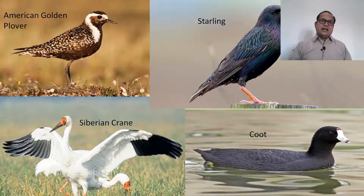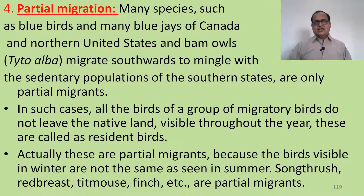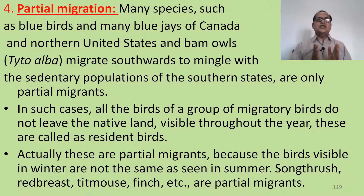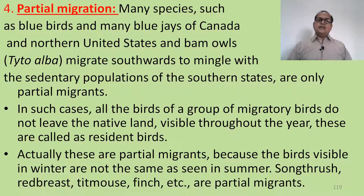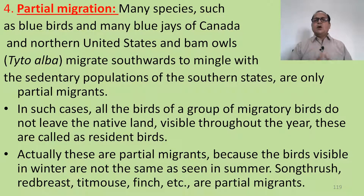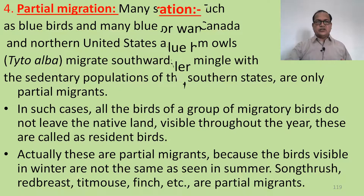Some well-known migratory birds include the American golden plover, starling, Siberian crane, and coot. Partial migration means only a part of the population migrates. There are many species such as the bluebirds, blue jays of Canada and North America, and the barn owl (Tyto alba) that migrate southwards to mingle with the sedentary population of the southern states — these are only partial migrants. In such cases, not all birds of a group leave their native land and remain visible throughout the year. These are also called resident birds. Birds showing partial migration include the song thrush, robin, titmouse, and finch.